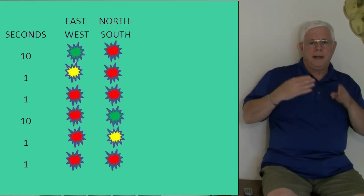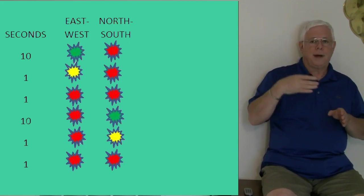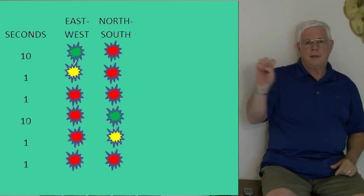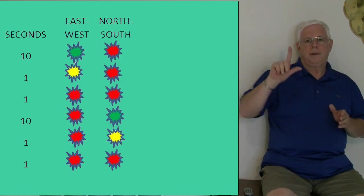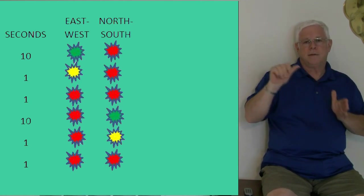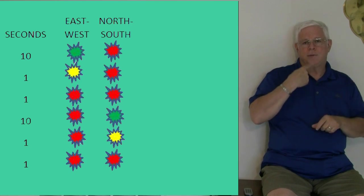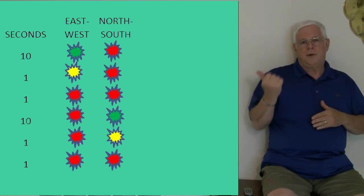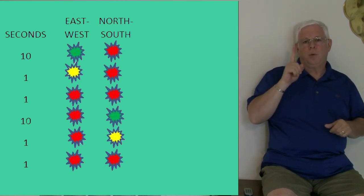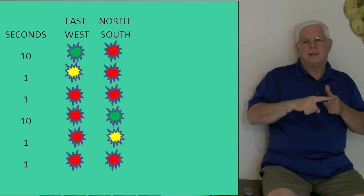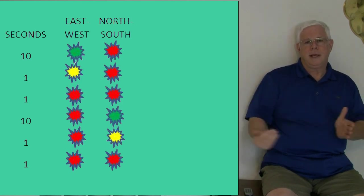Our traffic intersection has two directions: the east-west and the north-south. We're going to start with the east-west direction with ten seconds of green, then one second of yellow, and then it's going to change to red. And then on the other direction, north-south, it's going to stay red for one second and then start the same sequence again.